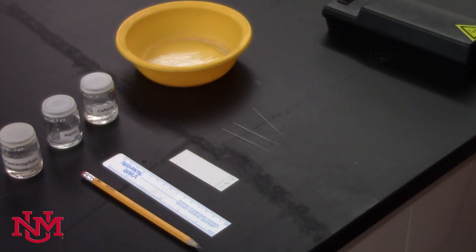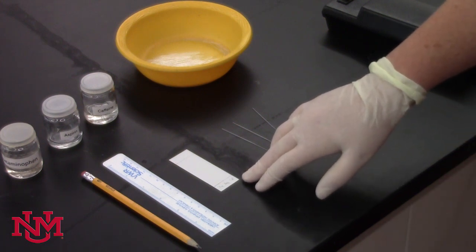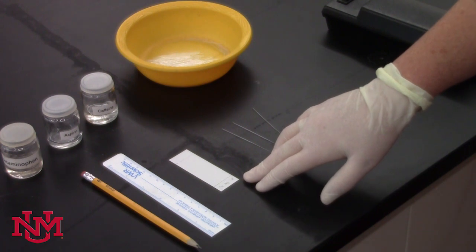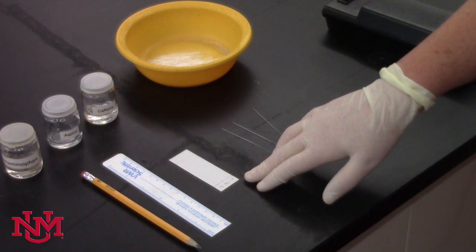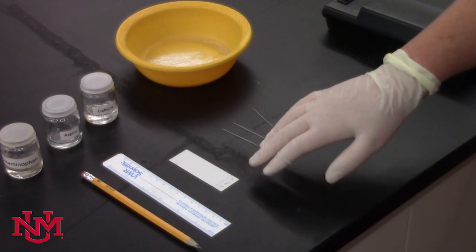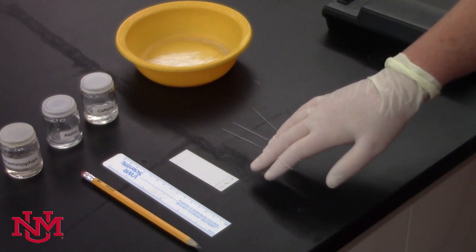Alumina is just aluminum oxide, and it's fairly polar. The idea behind TLC is that samples are either stuck and clinging to the solid support, or they want to move with a solvent up the plate. Try not to handle the TLC plate with your bare hands and hold it by the edges.